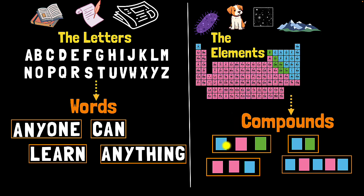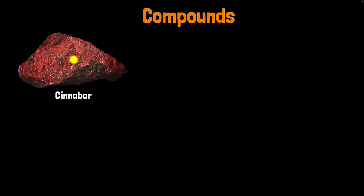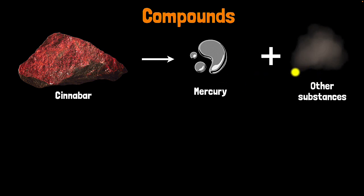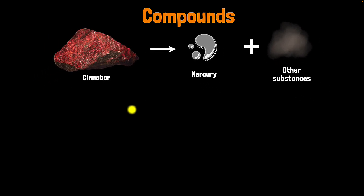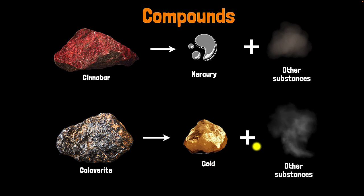How did we figure out that elements can combine to form compounds? When we took naturally occurring substances with metals in them — which we call ores — for example, cinnabar is an ore because it contains mercury. When we heated it, we were able to extract that mercury and some other substances as well. From this we could guess that cinnabar is made from a combination of different elements, so cinnabar is probably a compound. Another example: if you take the ore of gold, called calorite, and heat it up, you can extract gold and some other elements. So calorite is also a combination of elements. That's also why the periodic table does not list these compounds — they are not fundamentally new elements, they are formed by combination of elements.